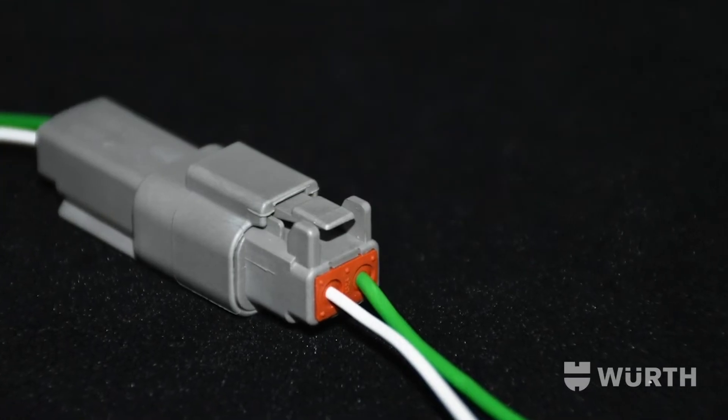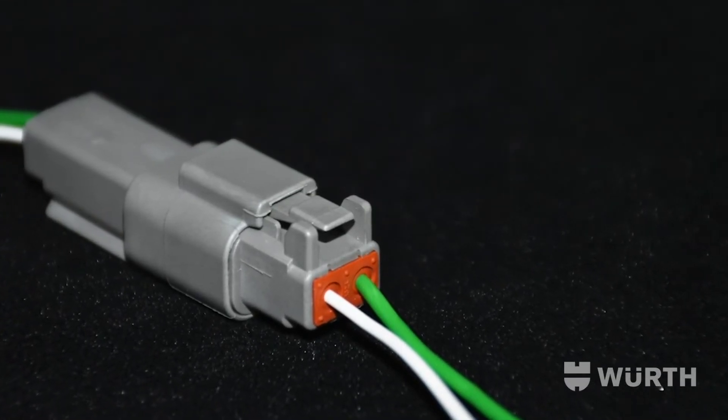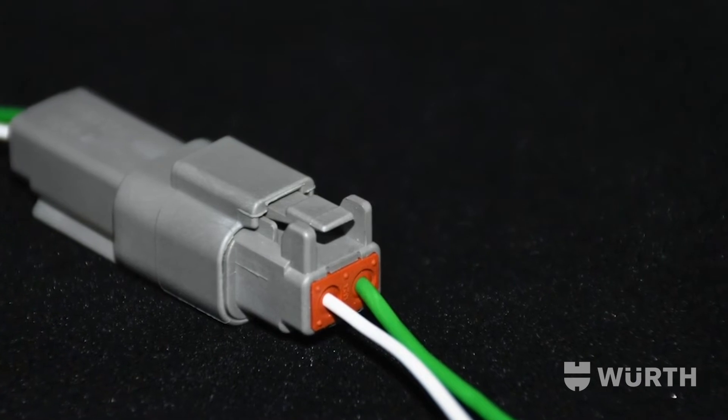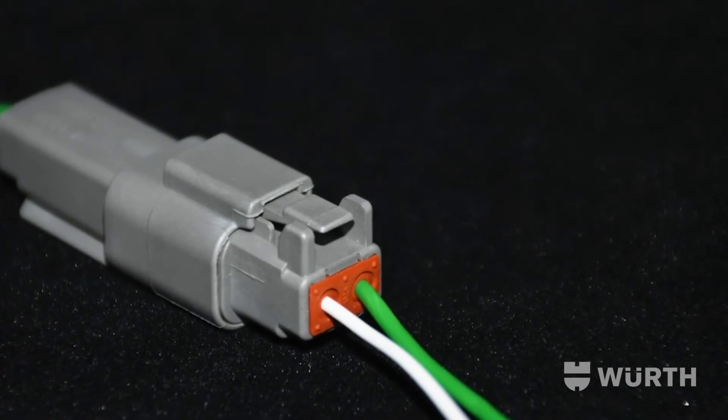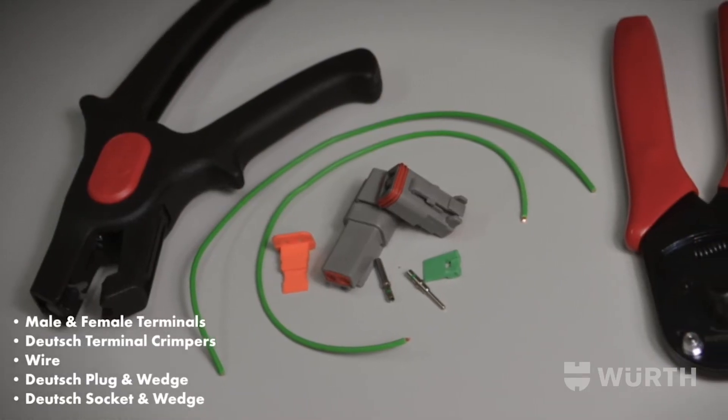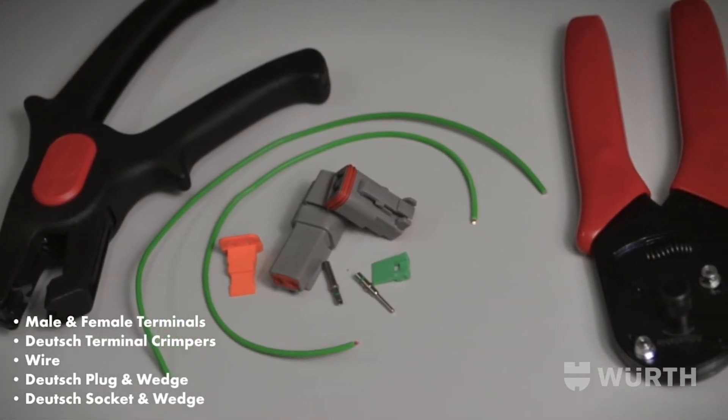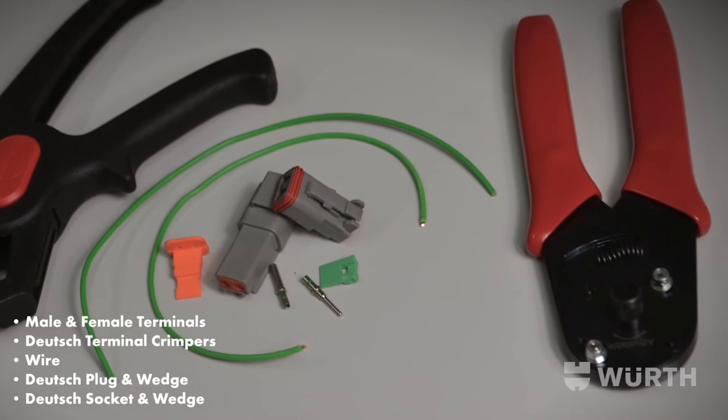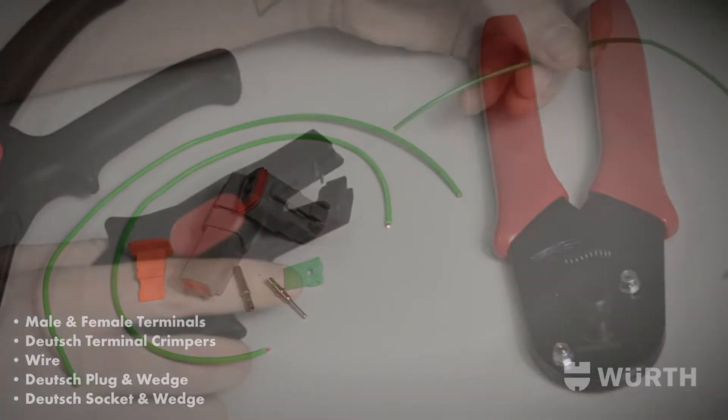This video will be demonstrating the crimping and assembling process of the new range of Deutsch connectors from Wurth. To begin you will need male and female terminals, Deutsch terminal crimpers, wire, Deutsch plug and wedge, and a Deutsch socket and wedge.